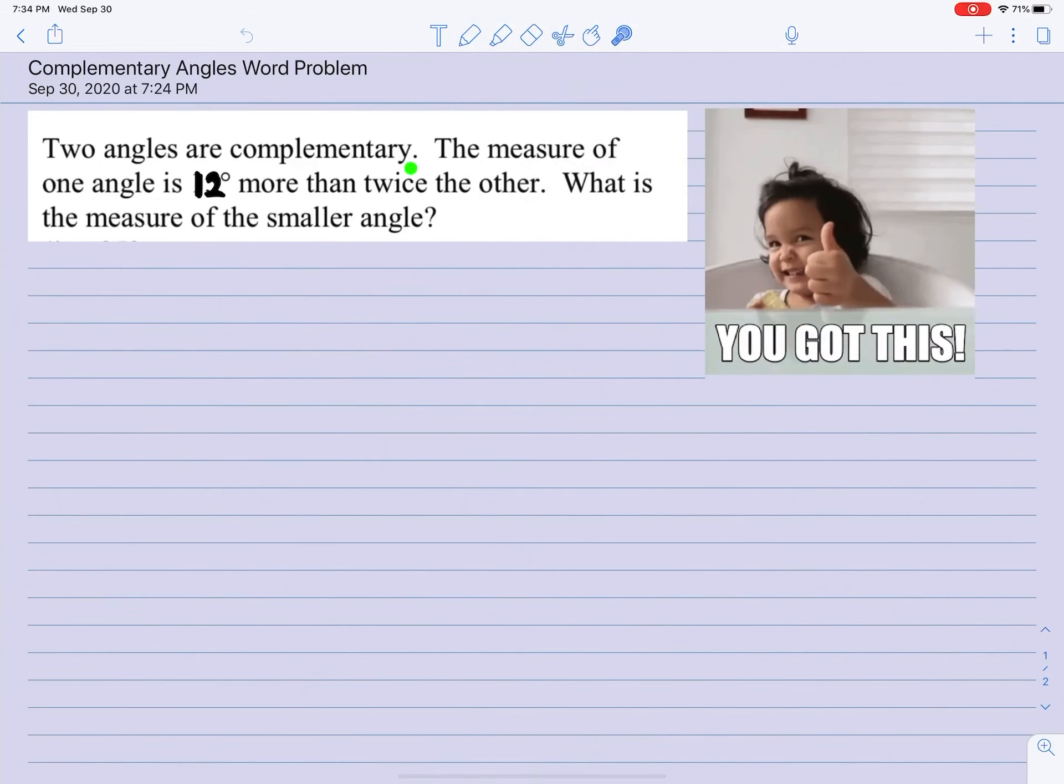It says two angles are complementary. So let's annotate. The measure of one angle is 12 more than twice the other. Wow, that's a lot. It says what is the measure of the smaller angle? So let me box that because that's what we want to look for.